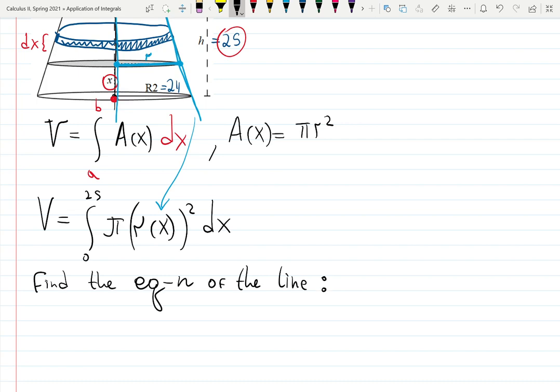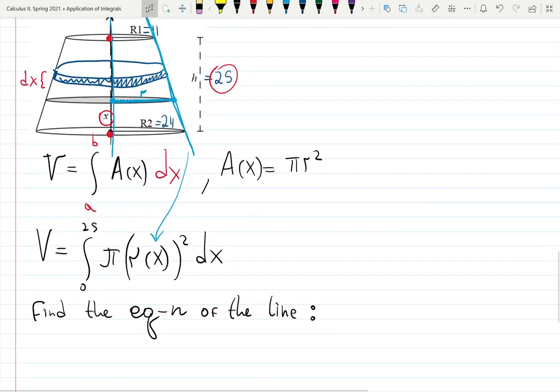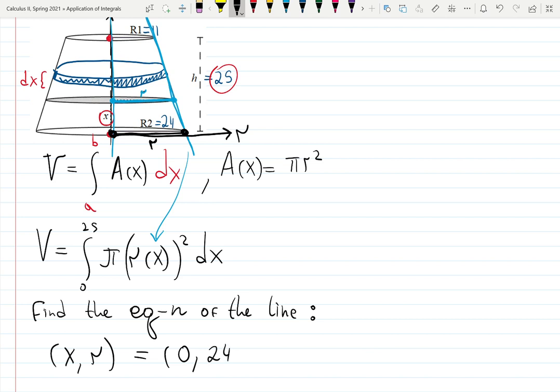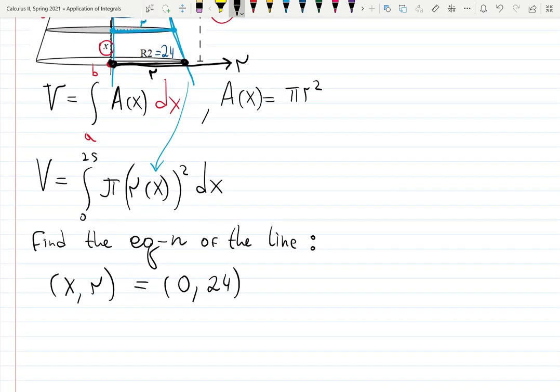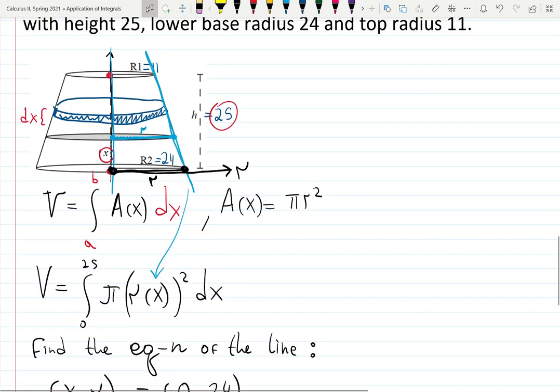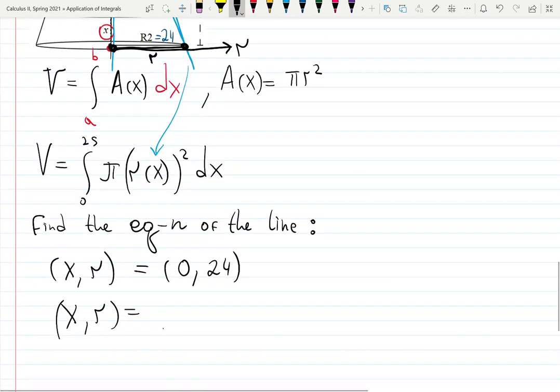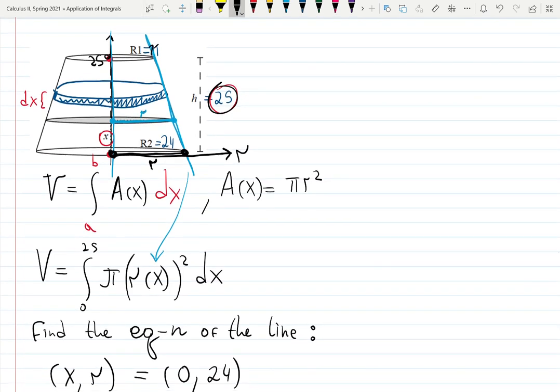We need to find the equation of the line that passes through two given points. Let's see x comma r. When x is zero, the height is zero, then the radius is the biggest one, 24. When the height is the biggest one, 25, then the radius is the smallest one, only 11. This radius is 11.